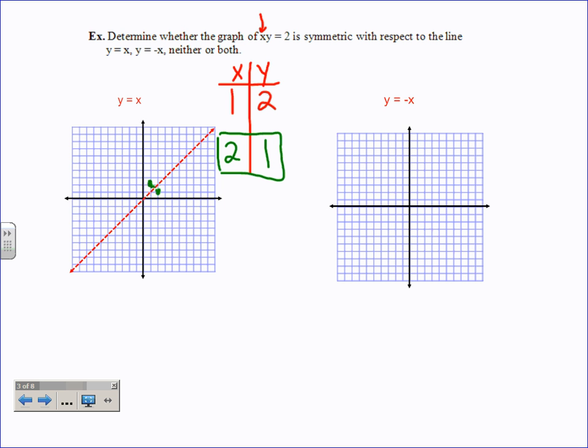Two, one also has to work for this to have symmetry with respect to line y equals x. What do you think? Does two, one also work in the original? Two for x, y being one? Two, one, does it still make it true? Yes, it does. So apparently it does have symmetry with respect to that line.